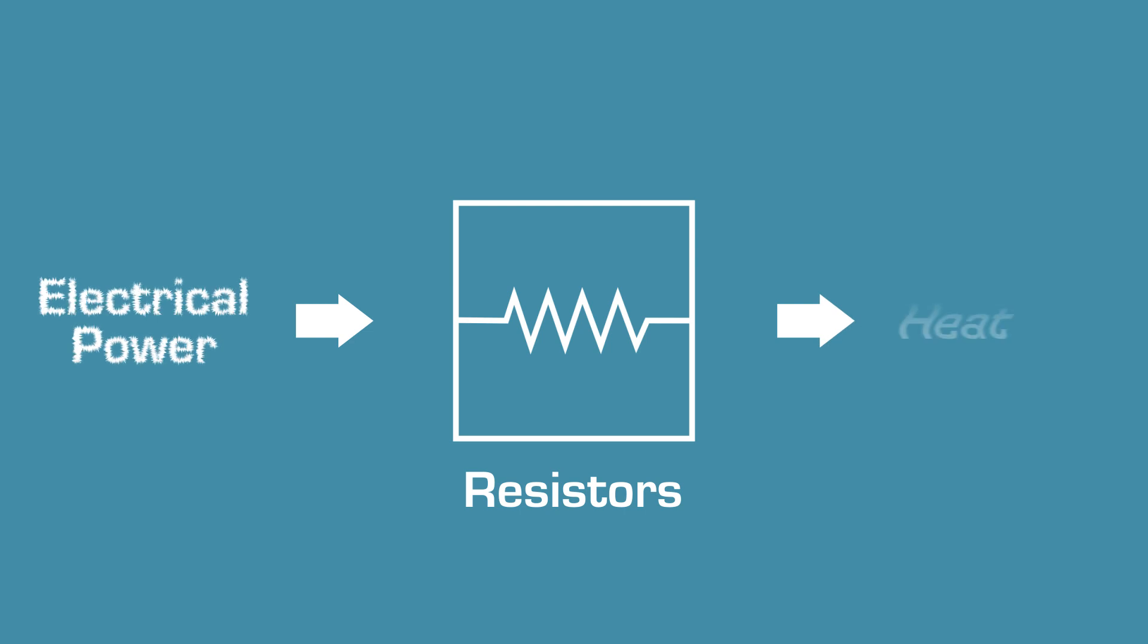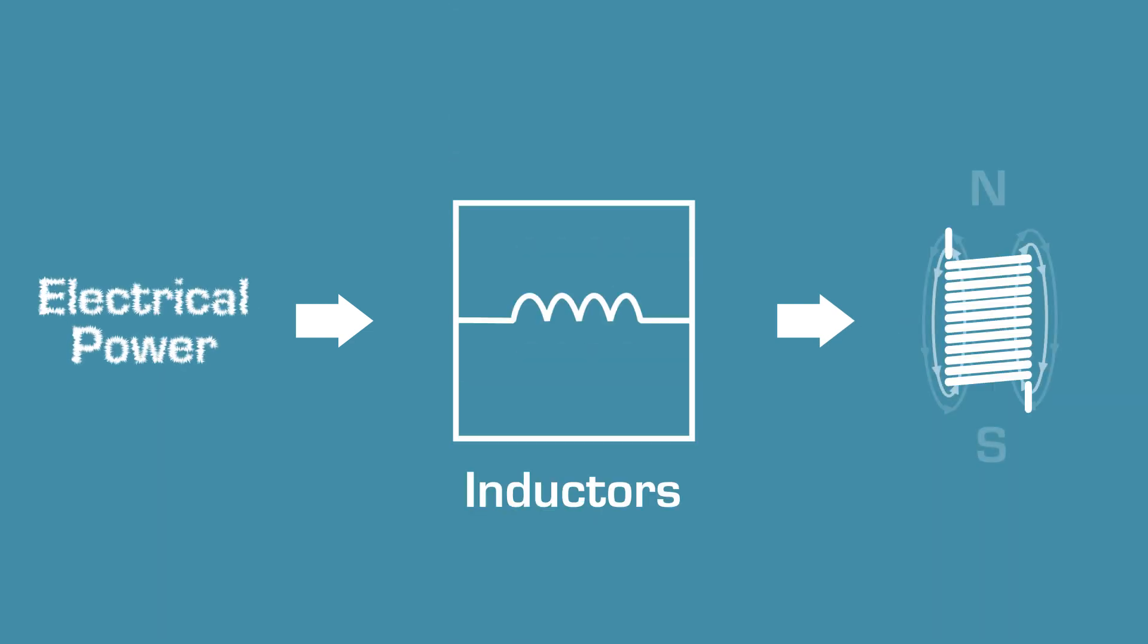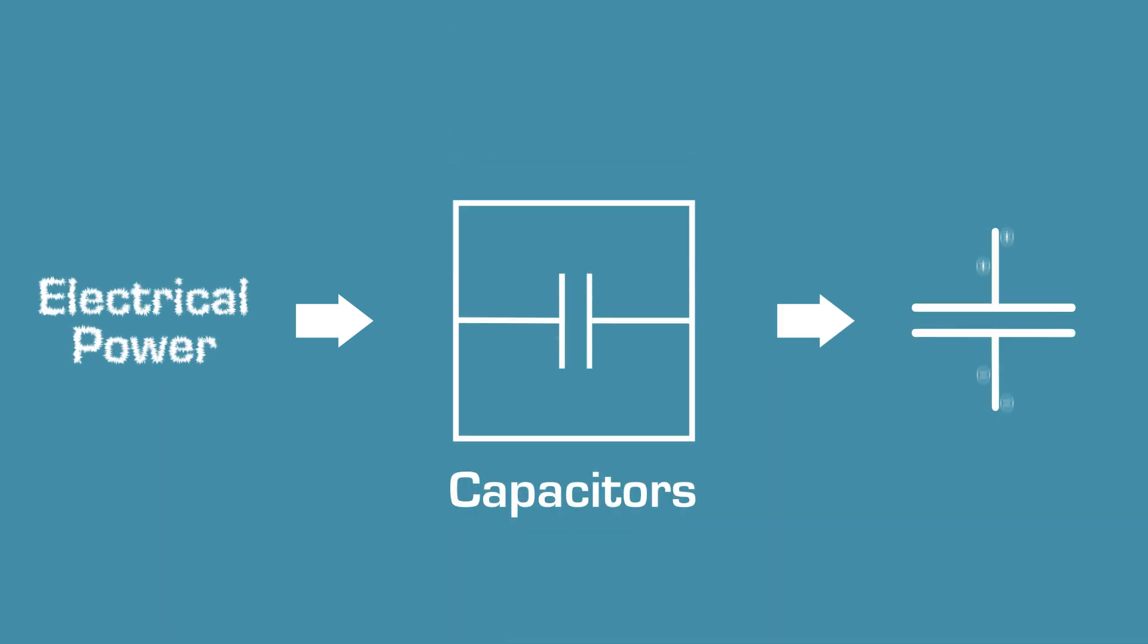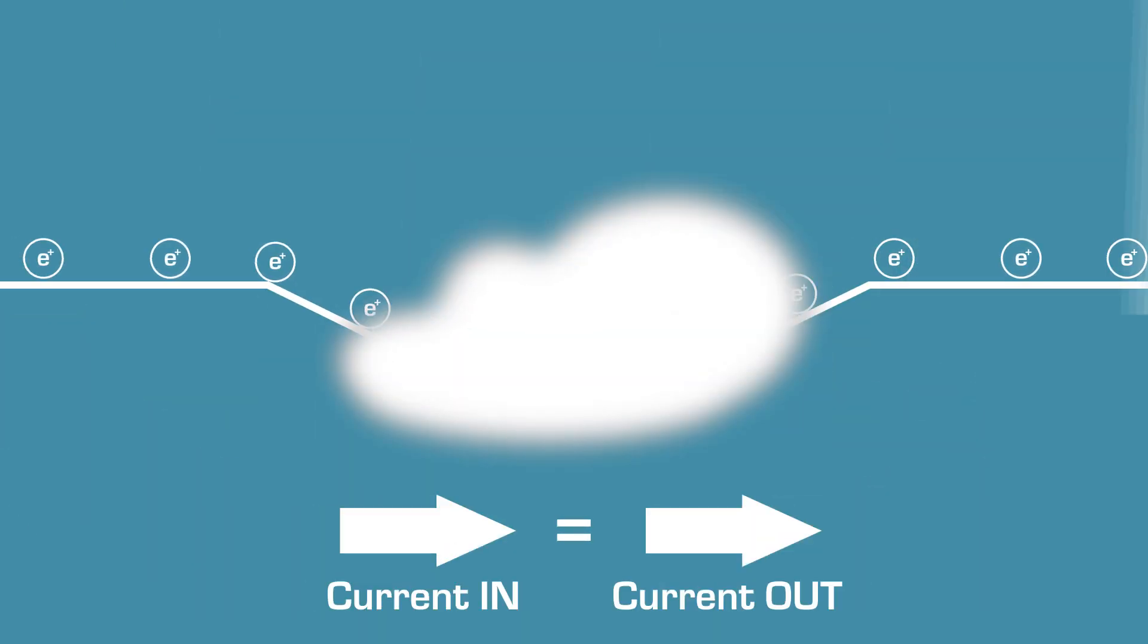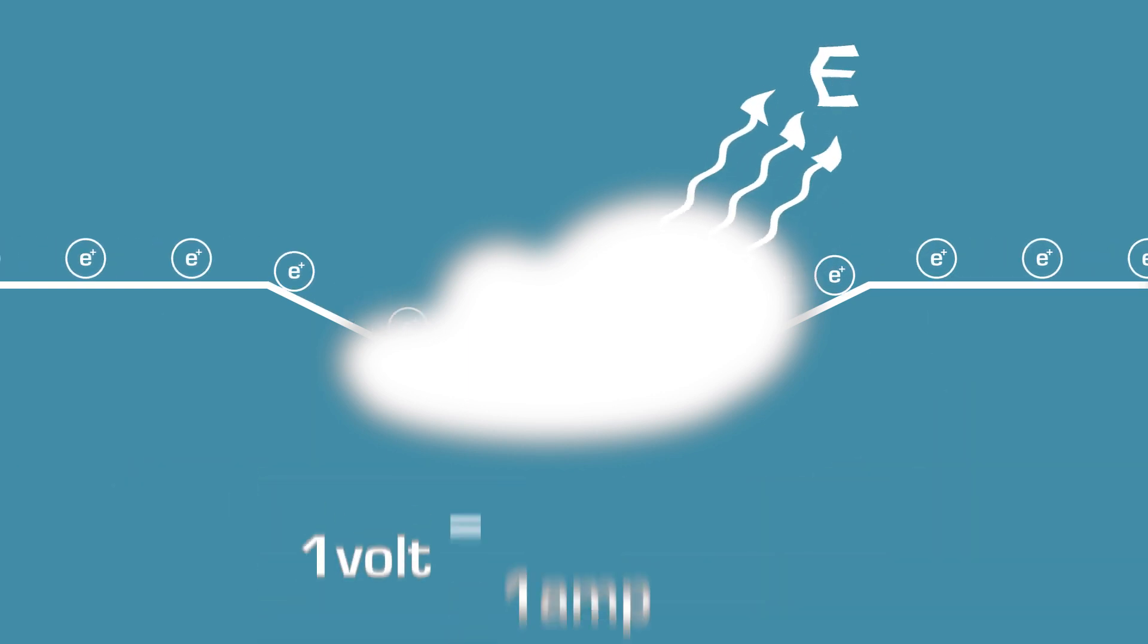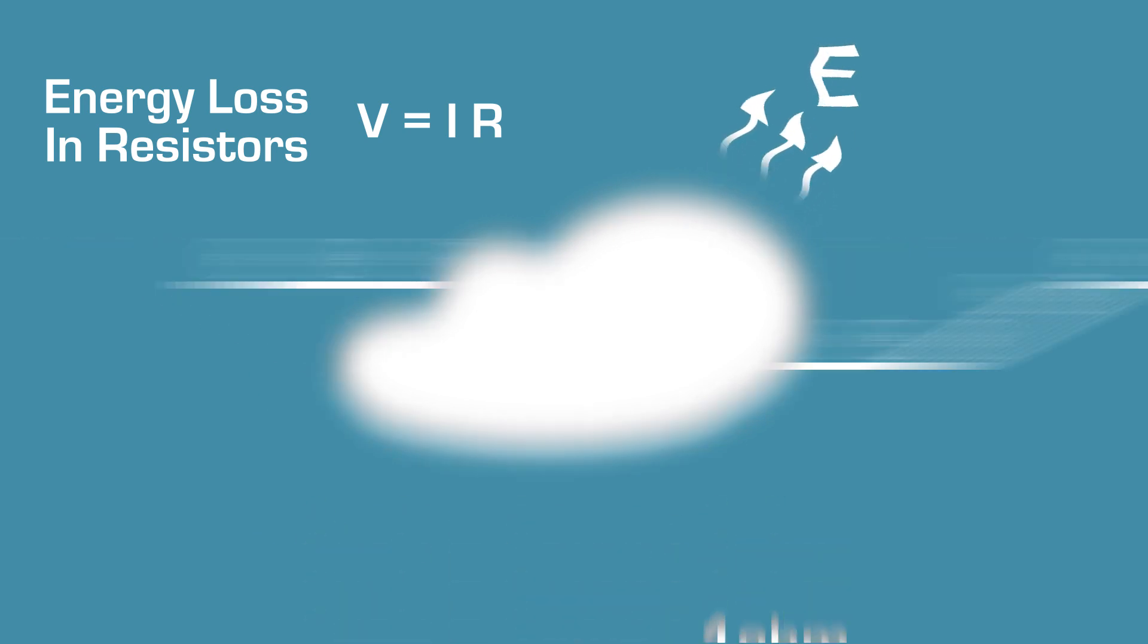Resistors convert electric power into heat or light, inductors store power as a magnetic field, and capacitors store power as an electrostatic field. Since the current flowing into and out of the circuit must be the same, the energy removed reduces the voltage across the load. This is a loss of 1 volt for every 1 amp crossing a 1 ohm resistor.